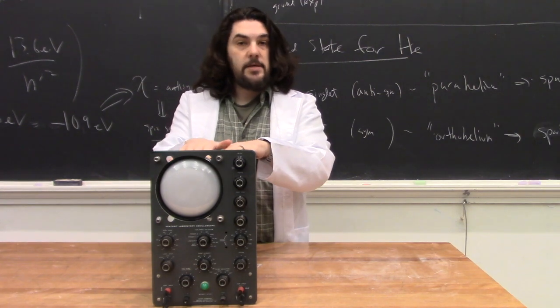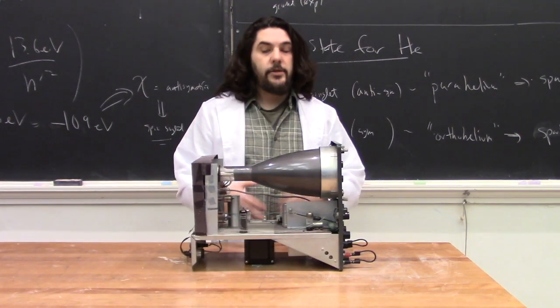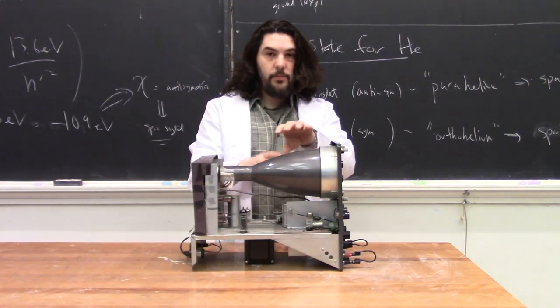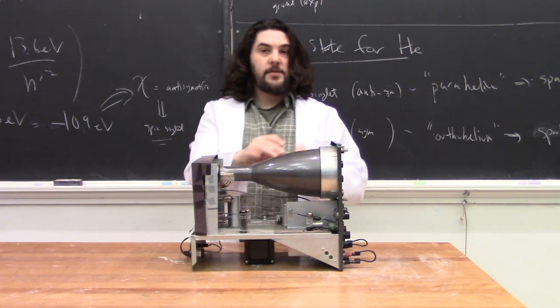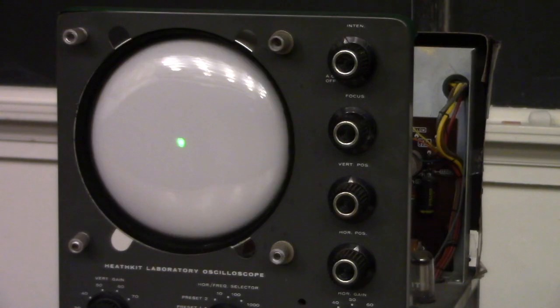This is an analog CRT oscilloscope. The electronics on the inside are used to control precisely where the electron beam is deflected to, based on these inputs. Without any deflection, the beam is going to tend towards the center.